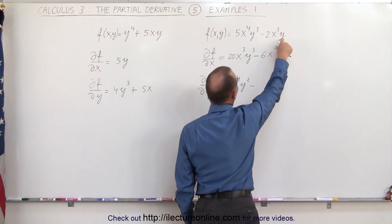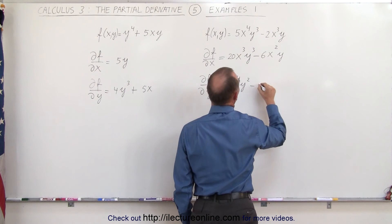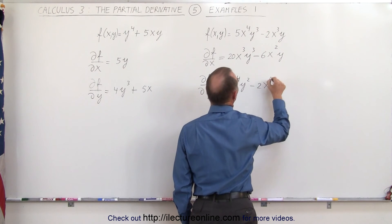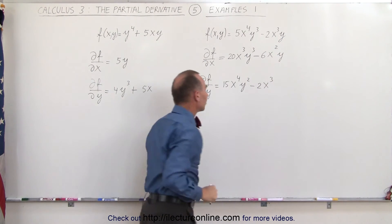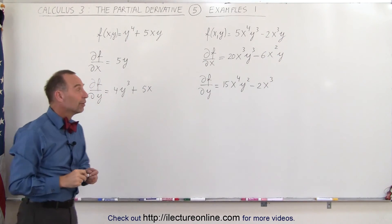again here, that y is a variable. 2x cubed is a constant, so it's minus 2x cubed. The derivative of y with respect to y is equal to 1, and there's the partial derivative.